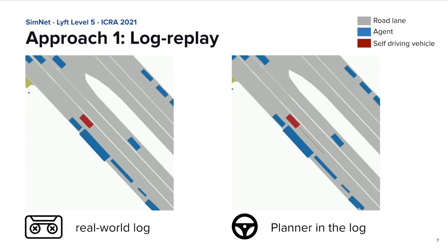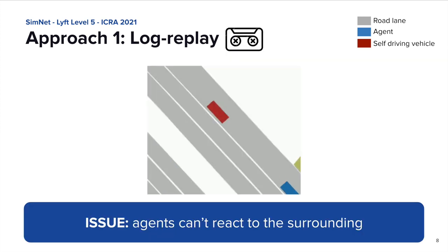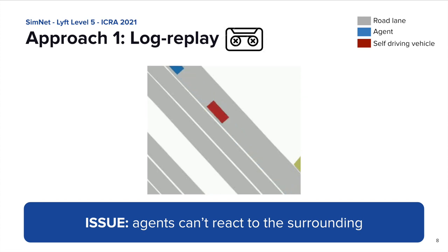So have we solved simulation? Well, not really. This approach has a huge and well-known issue: the agents have no brain at all and will just follow the path written in the data. So if the SDV is slower or completely stopped, like in this illustrative example, the agent behind will not slow down and will eventually run over it. This simulation is also referred to as non-reactive, exactly for this very reason.